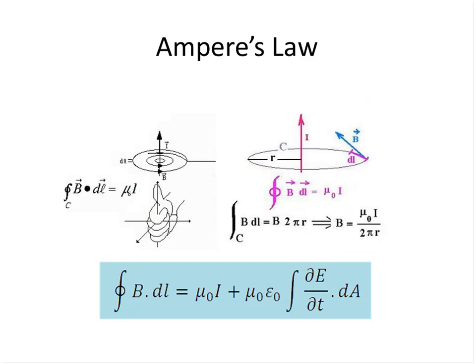Ampere's law says that when you have a current-carrying conductor, if you integrate the magnetic field strength on a closed loop you get μ₀ times the current contained inside that loop. If there is a changing electric field there's an additional term — freshman physics often drops it, but in reality it exists. If the electric field was not changing and potential was constant, that term can be dropped. This shows how physical and electrical phenomena are interrelated — a way of measuring magnetic field strength from a current-carrying conductor.